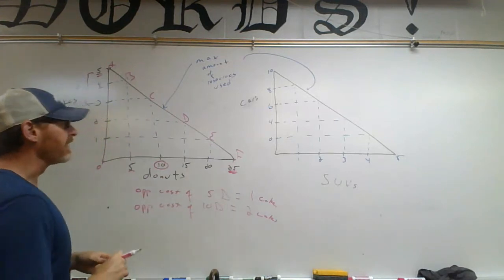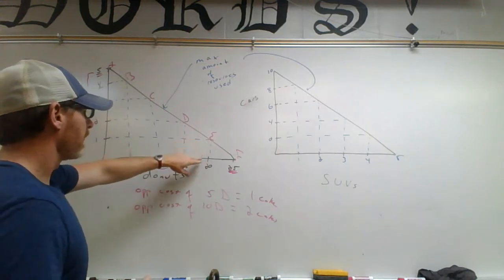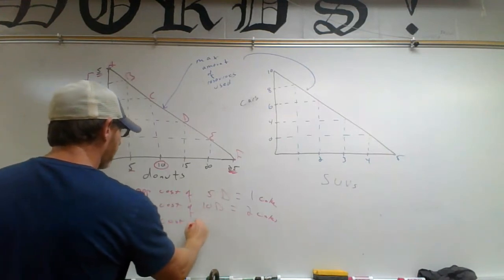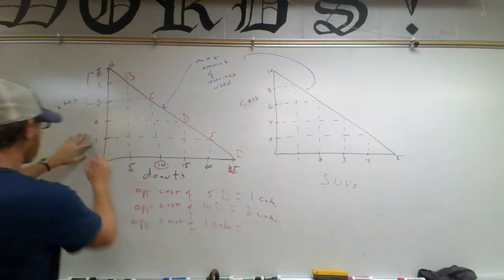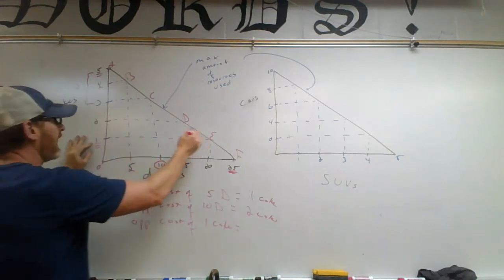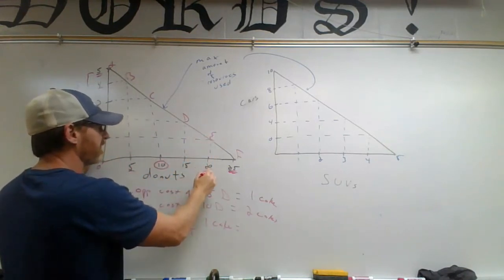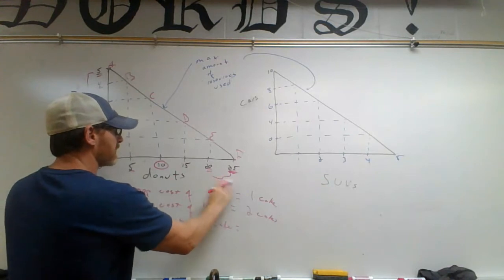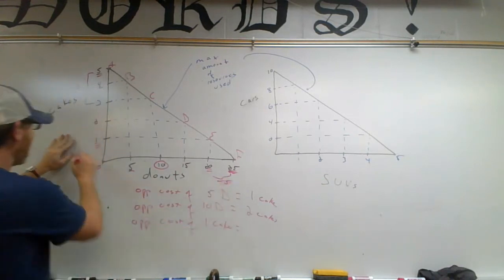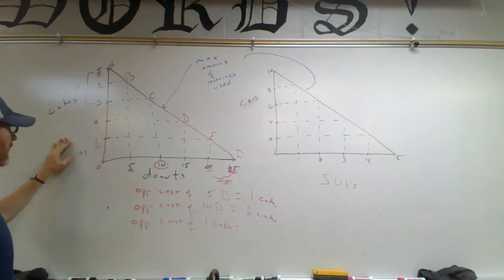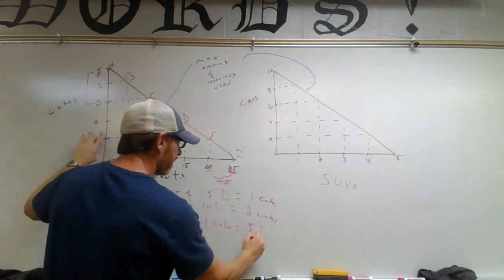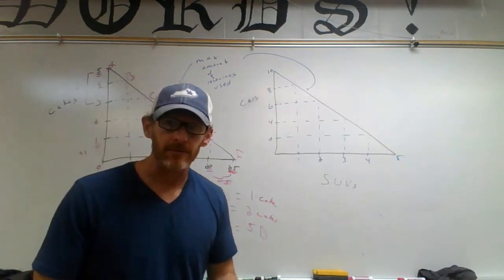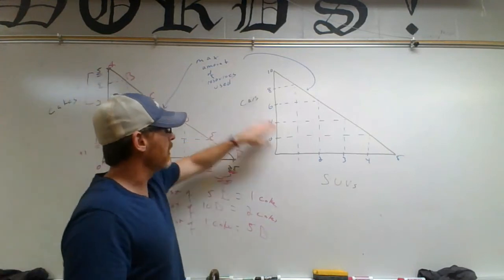Now let's say we start at point F, making 25 donuts, and we want to go to point E. We want to add one cake. The opportunity cost of one cake: if we now have one cake, we follow the line and find we only have enough resources left to make 20 donuts. So we had to give up five donuts to gain one cake. The opportunity cost of gaining a cake is five donuts. We measure everything in what we're giving up.